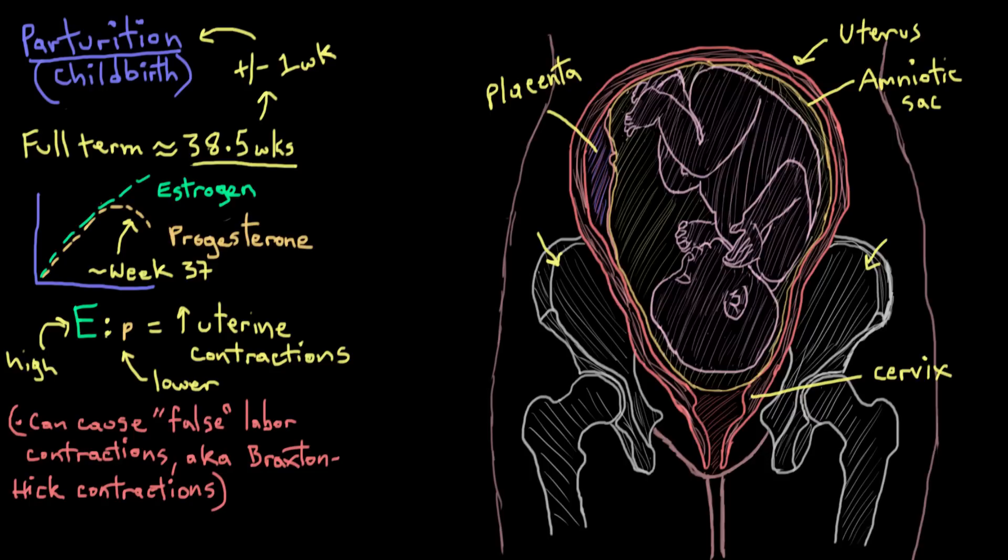So together you call the two sides of the pelvic bones the pelvis. This here is one of mom's thigh bones or her femurs. And this here, the space, is called the birth canal or the vaginal canal.